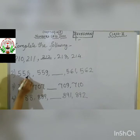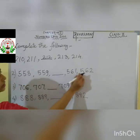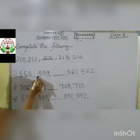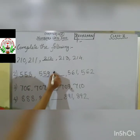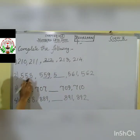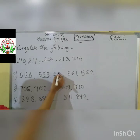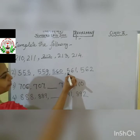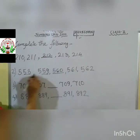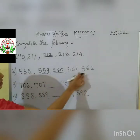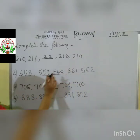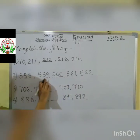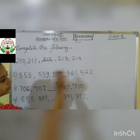Next question: 558, 559, blank, 561, 562. All the digits are numbers of 500. After 558 comes 559. After 59, which number comes? 60. So 560 is the missing number, then 561, 562. First see the 100's place: 5 is constant. Then see 58, 59 — after 59 which number is coming? 60. So we write 560. Then 61, 62. Okay?